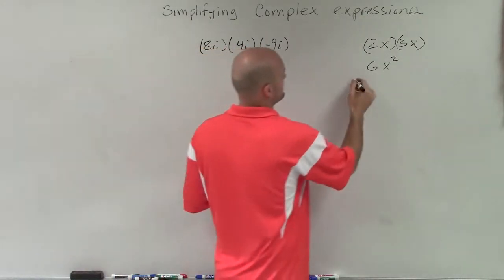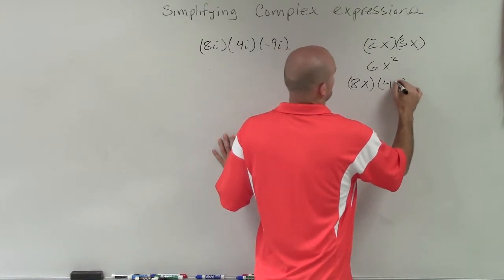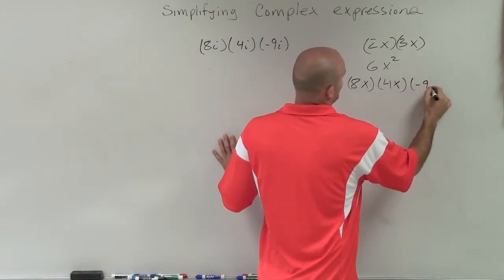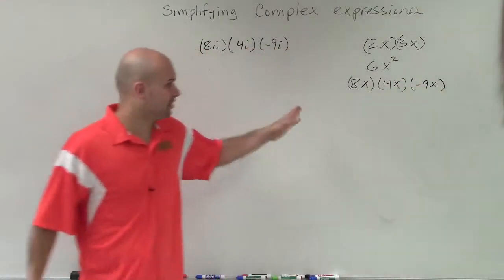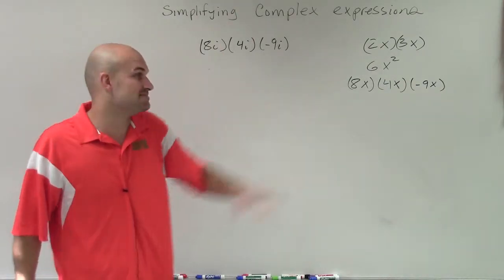So if I give you an example that looked like this, 8x times 4x times negative 9x, we do the same thing. We multiply 8 times 4 times negative 9, and then we multiply x times x times x.